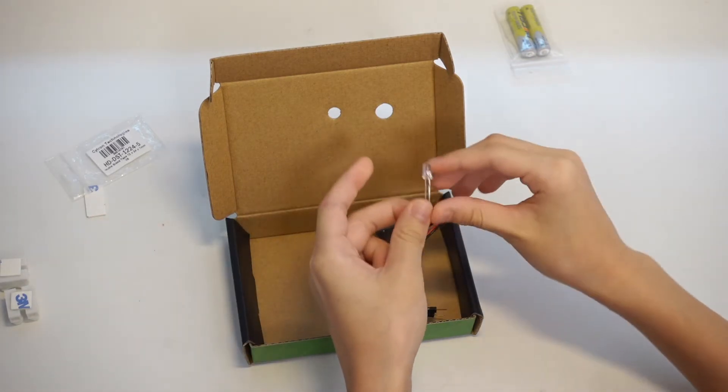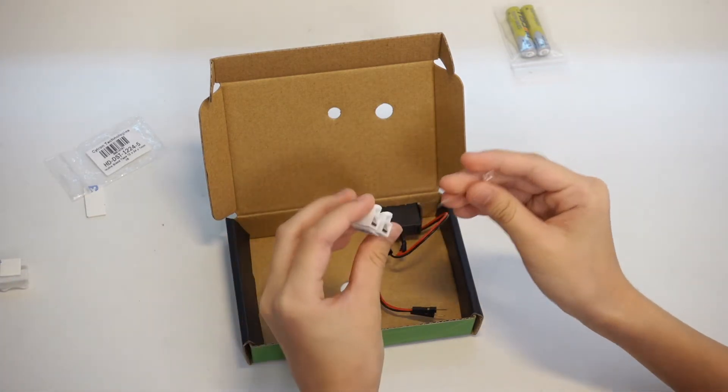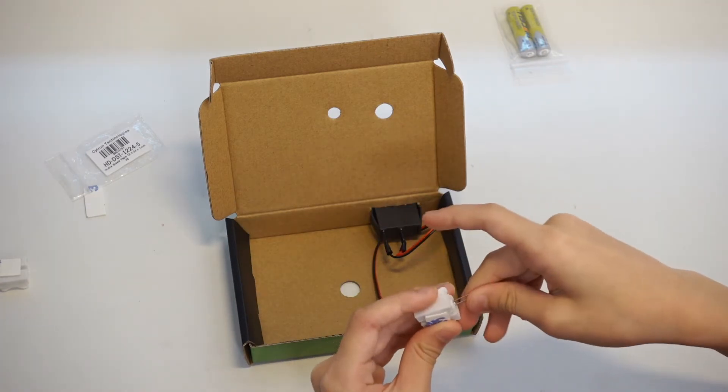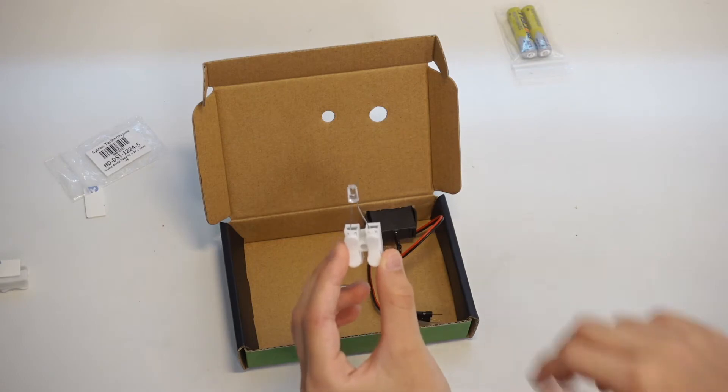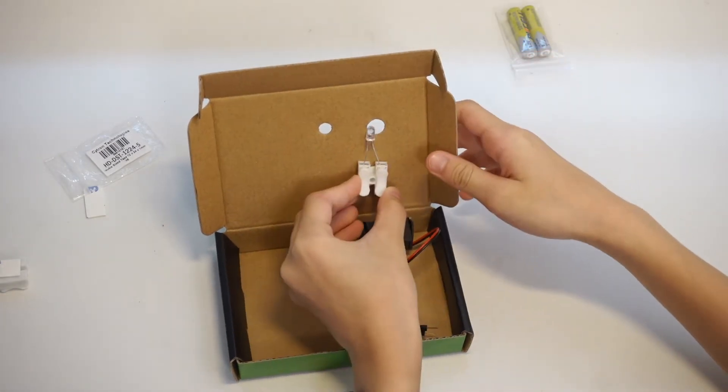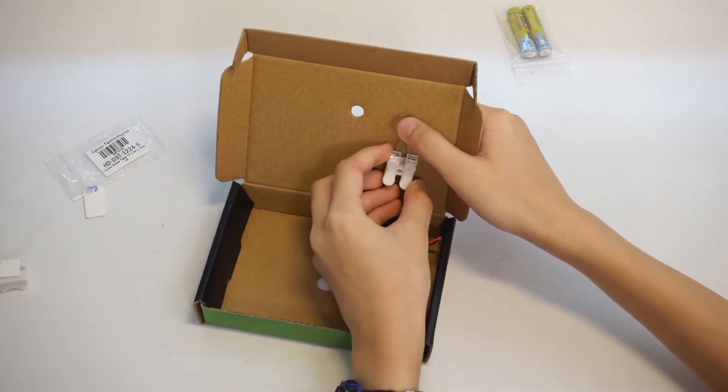There's a long leg and a short leg. It fits inside here. The long leg is positive. The short leg is negative. Now that it's poked in, we have got to position it here. And then we are going to turn it 90 degrees.